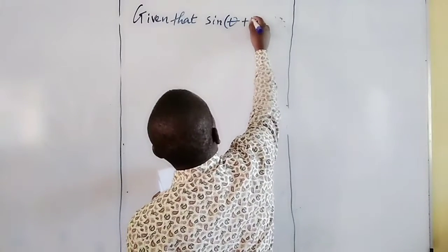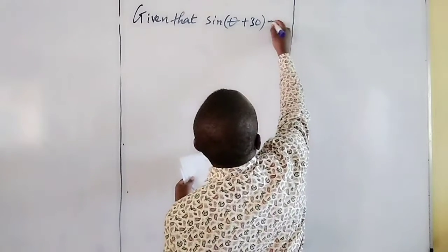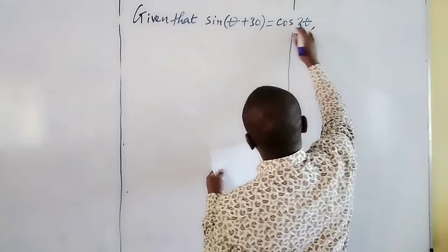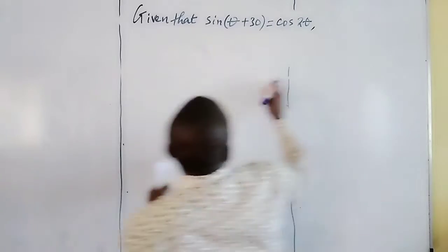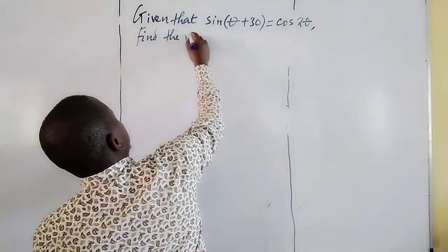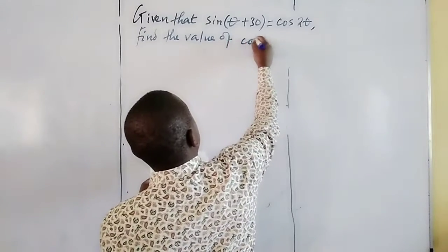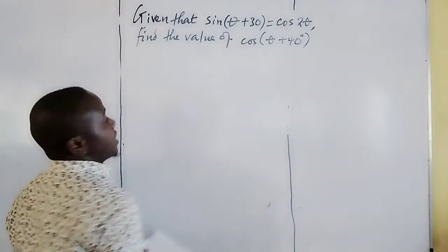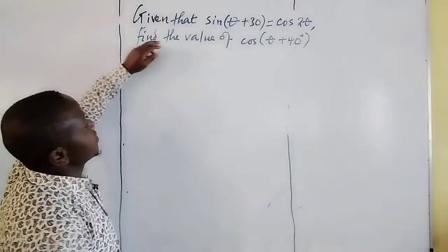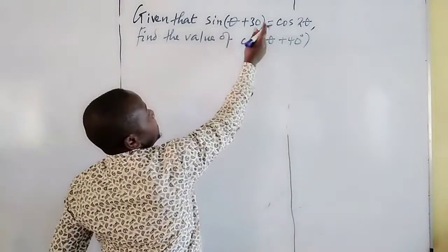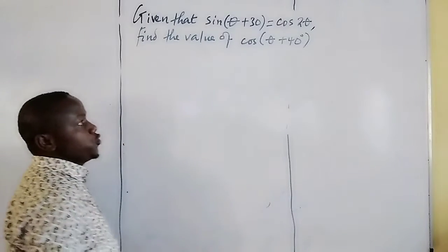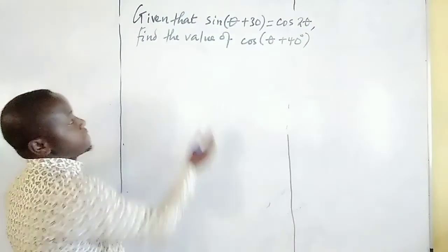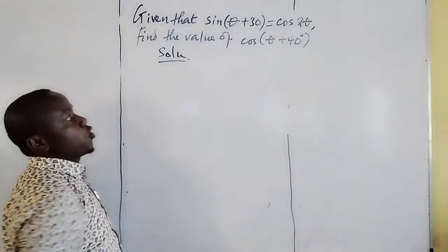Given that sin(θ + 30°) = cos(2θ), find the value of cos(θ + 40°). Okay, observing this equation...